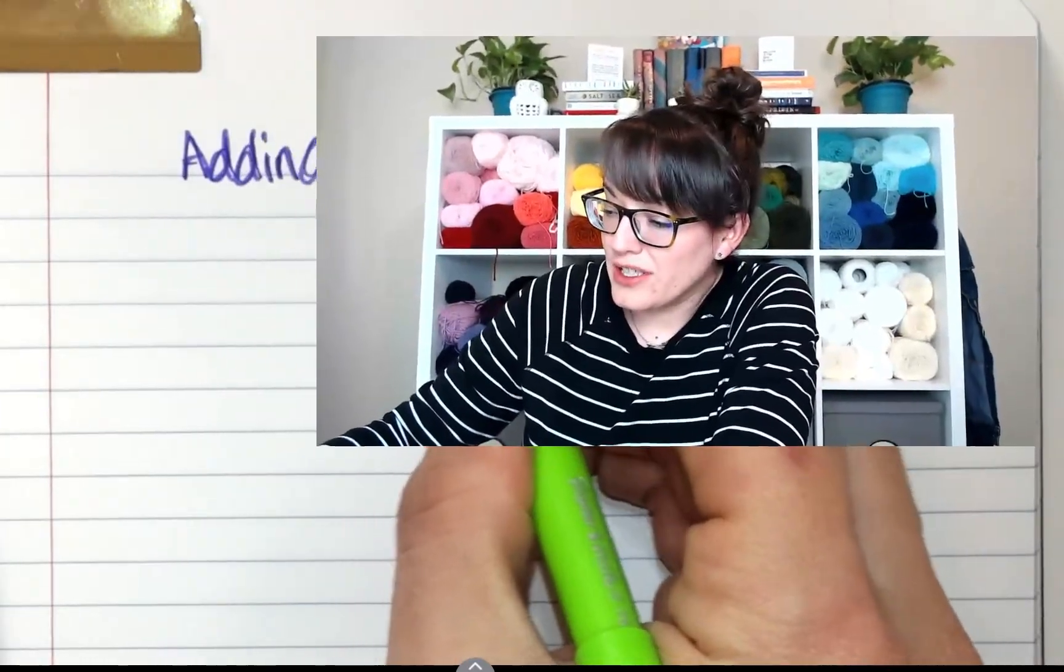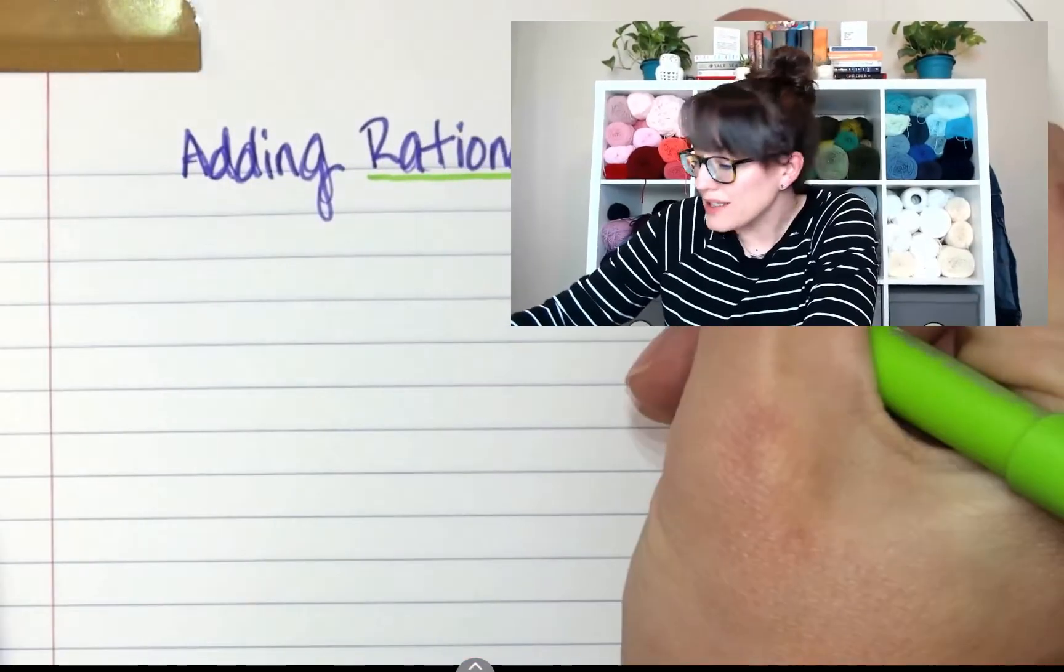So today we are talking about adding rational numbers. First, we need to figure out what is a rational number. A few lessons back, we talked about rational numbers and rational numbers are fractions and decimals that can be positive or negative.